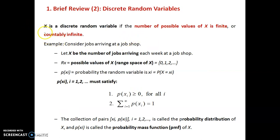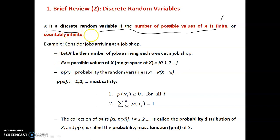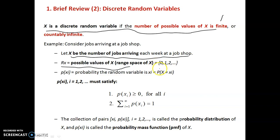X is a discrete random variable if the number of possible values of X is finite or countably infinite. Consider a job arriving at a job shop. Let X be the number of jobs arriving each week at the job shop, and Rx is the possible values of X, which could be 0, 1, 2 and so on.